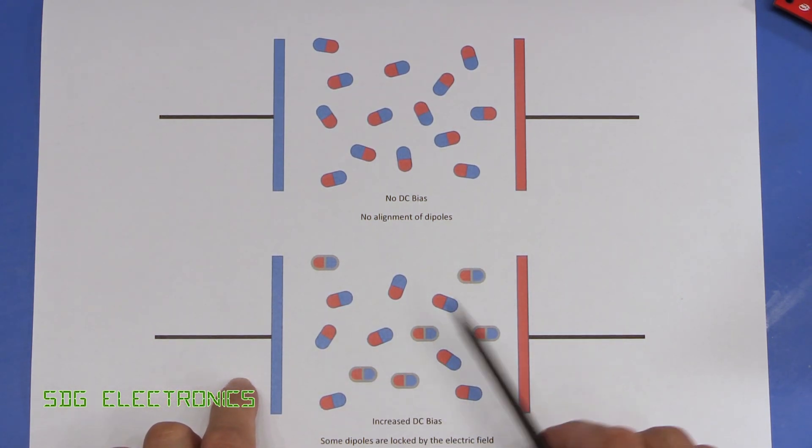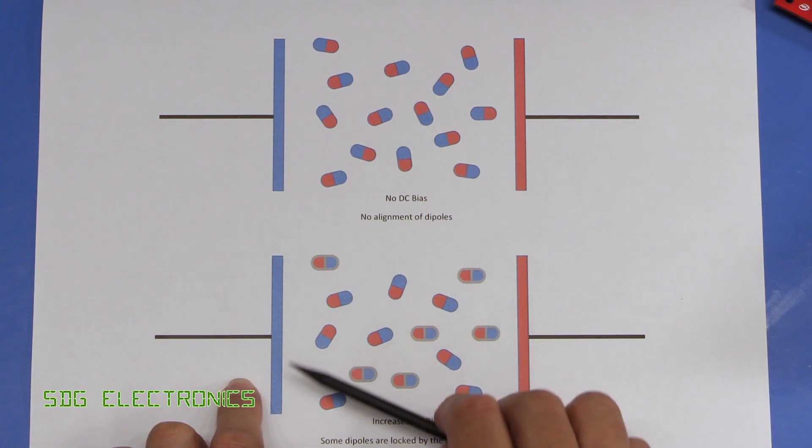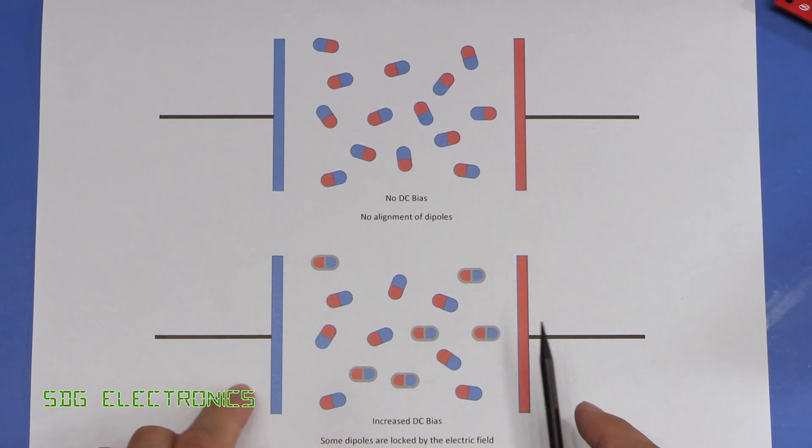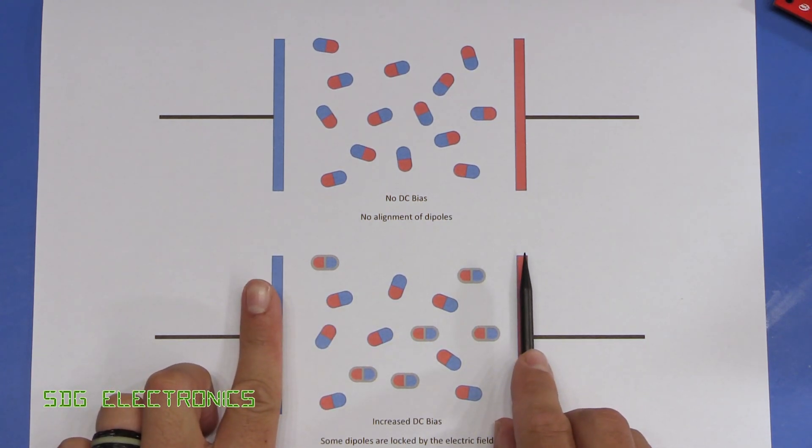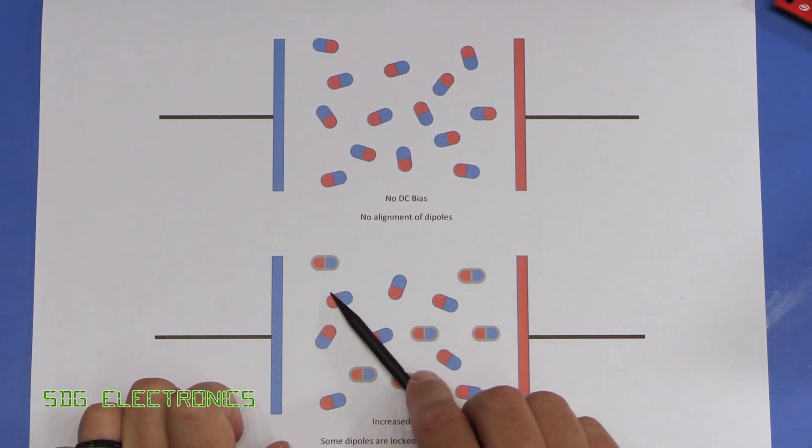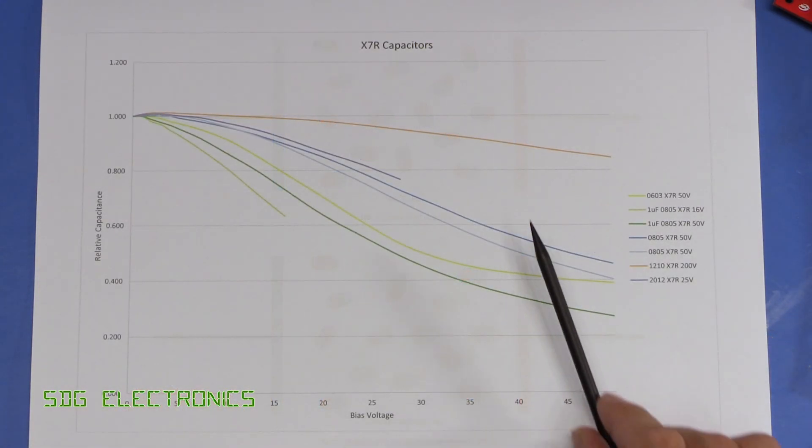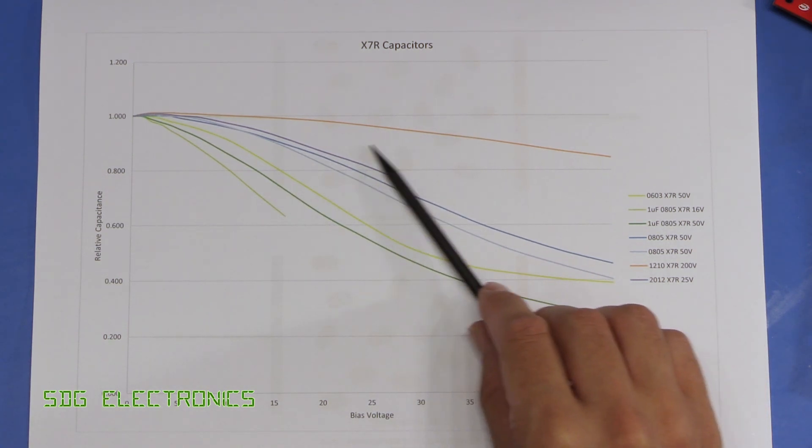And as the DC bias voltage increases, more and more of these dipoles start to lock in place, resulting in a lower capacitance. This gives us some of the reasoning behind why we end up with these curves here.